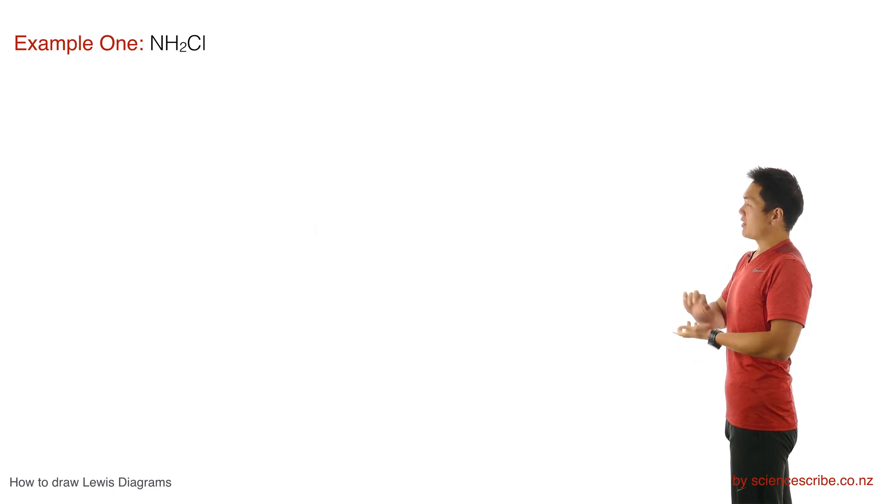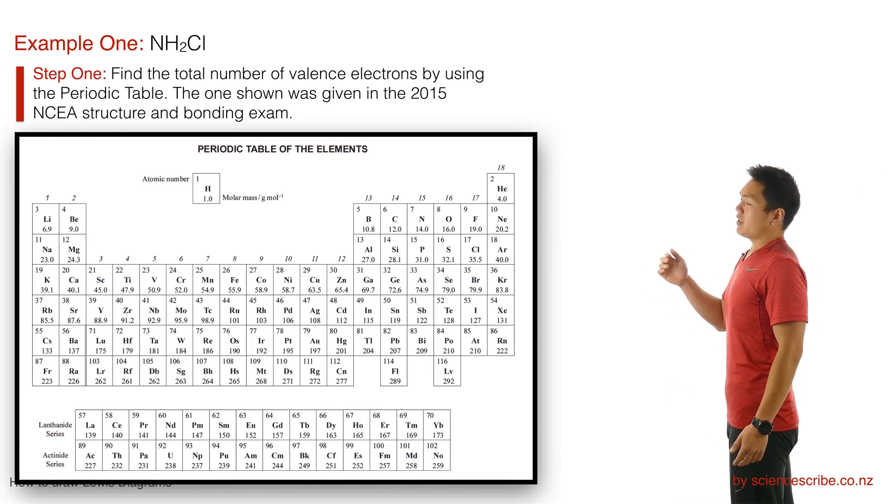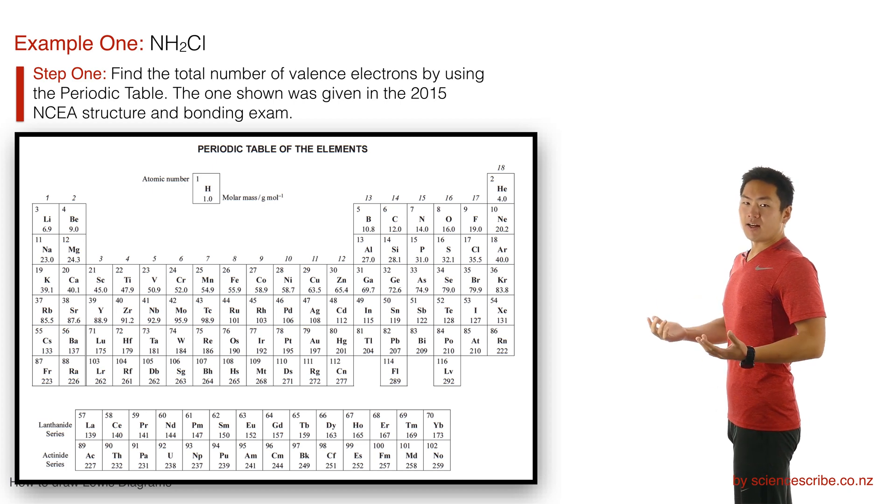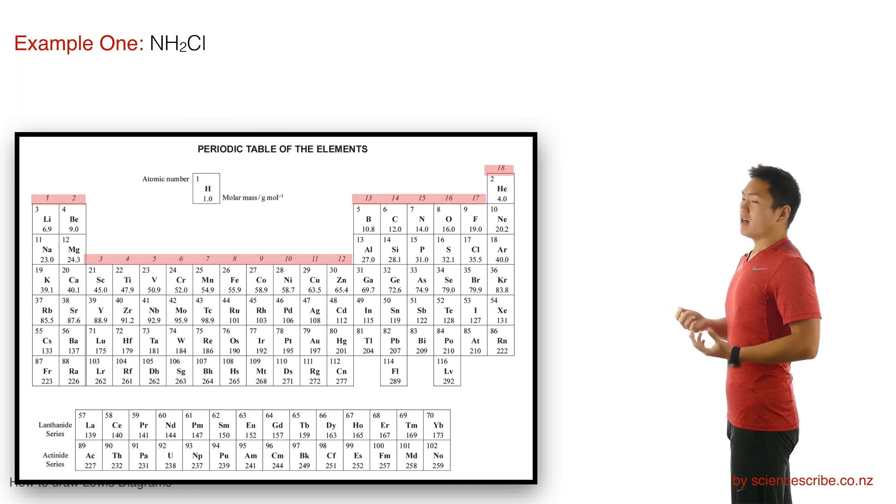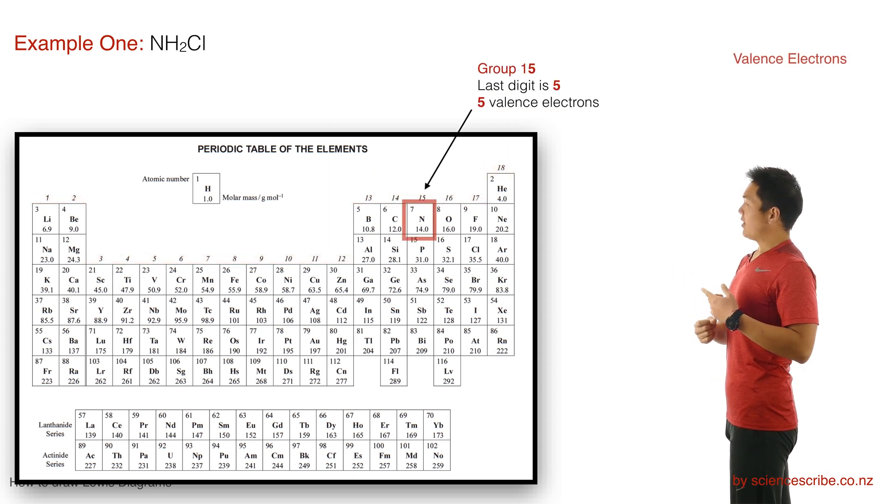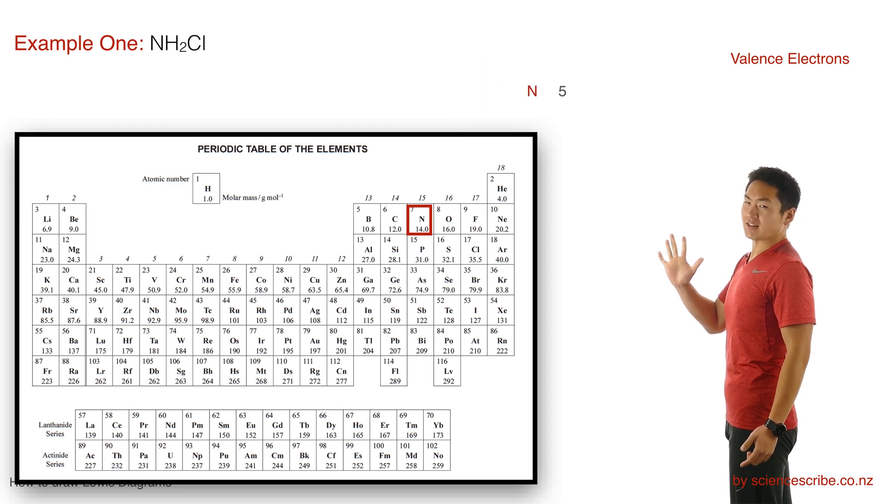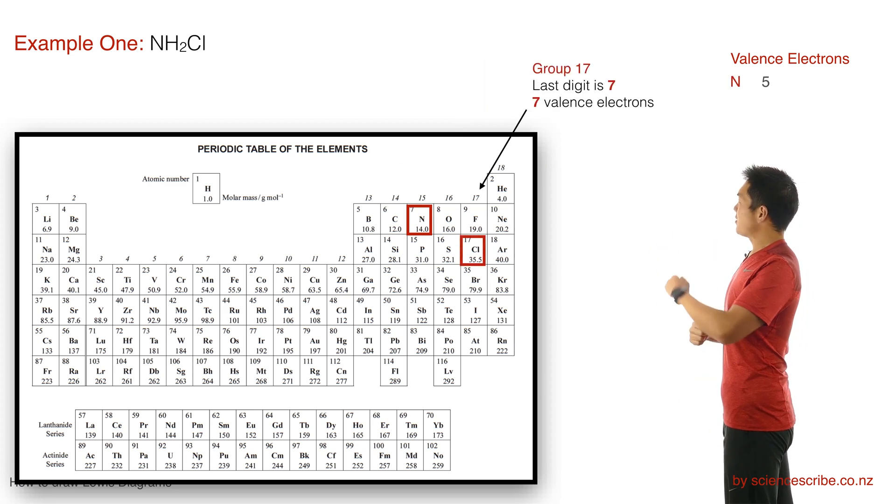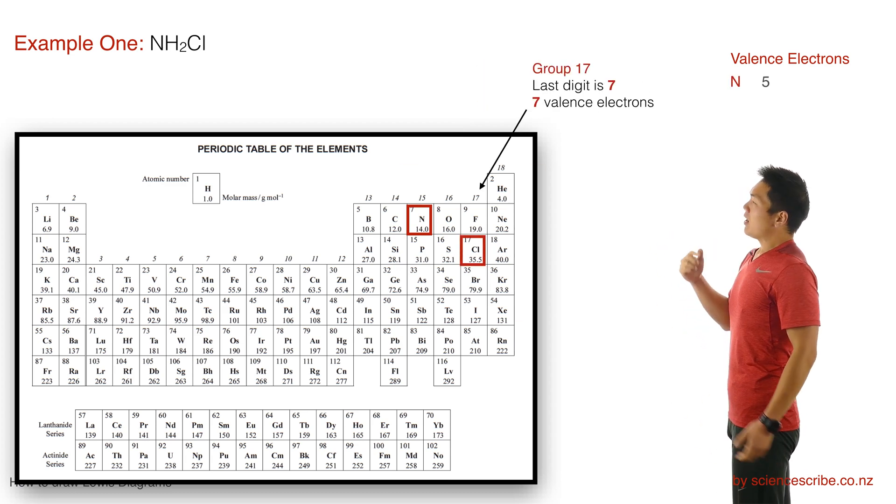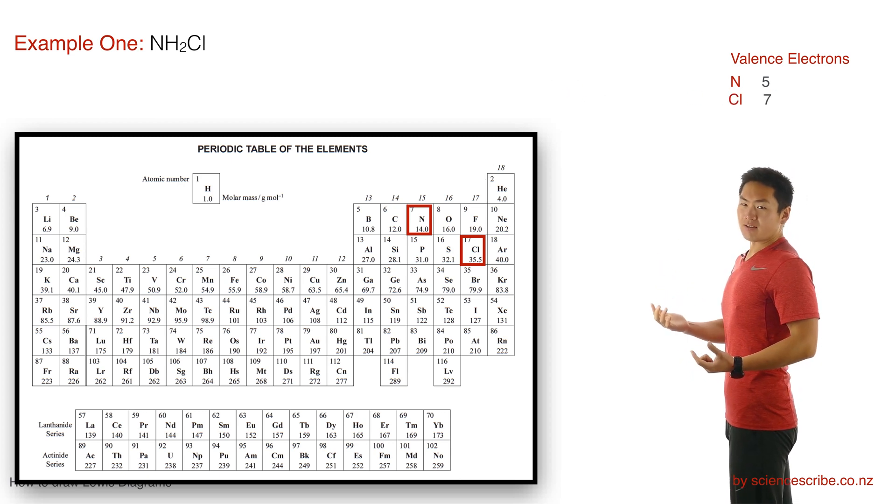To do that, the first thing I'm going to use is a periodic table, because this periodic table actually shows me the number of valence electrons in each of those atoms. I can do that by looking at the group numbers along the top. I can see that nitrogen is in group 15, so it supplies 5 valence electrons. I take the last digit. I can see that chlorine is over in group 17, so that means I take the last digit again, so chlorine will supply 7 valence electrons.